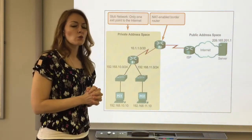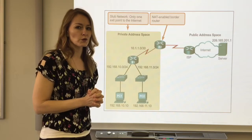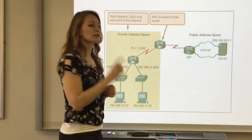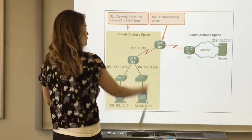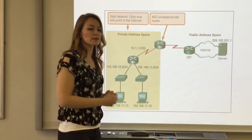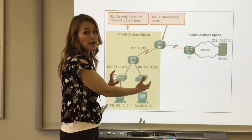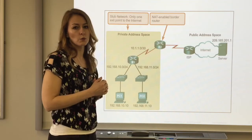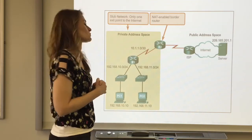That works best when you have a border router. A border router here is one exit point from your local area network to the internet. This is called a stub network because there's only one exit point and entrance point as well.